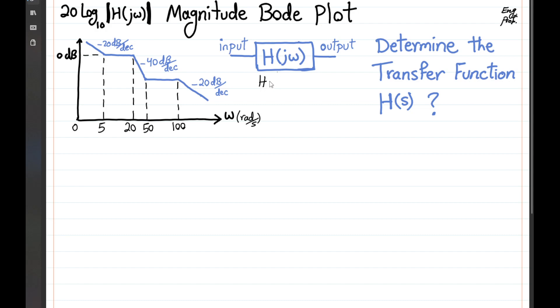So basically we have h of s, and then when we substitute s with j omega, we get h of j omega, which is the frequency response of the transfer function, and the Bode magnitude plot of that is shown here.